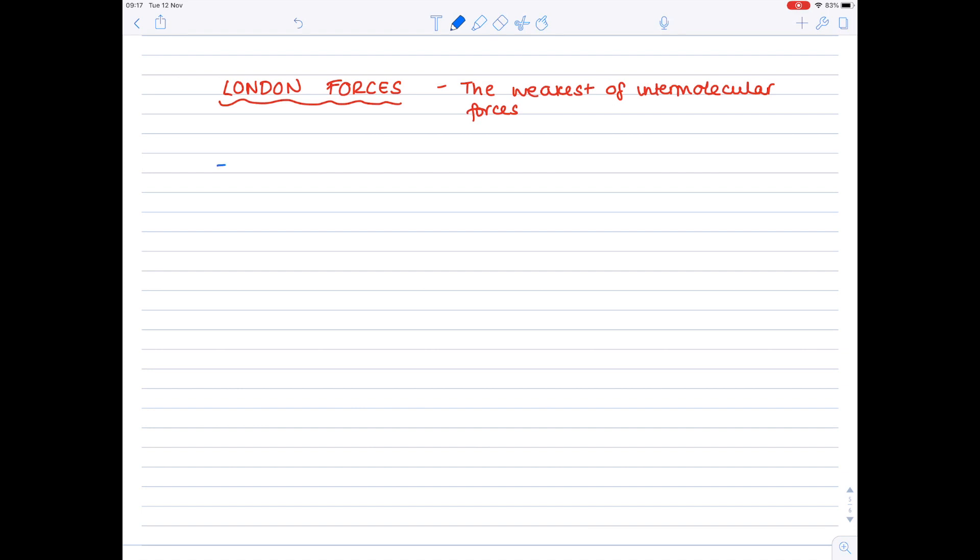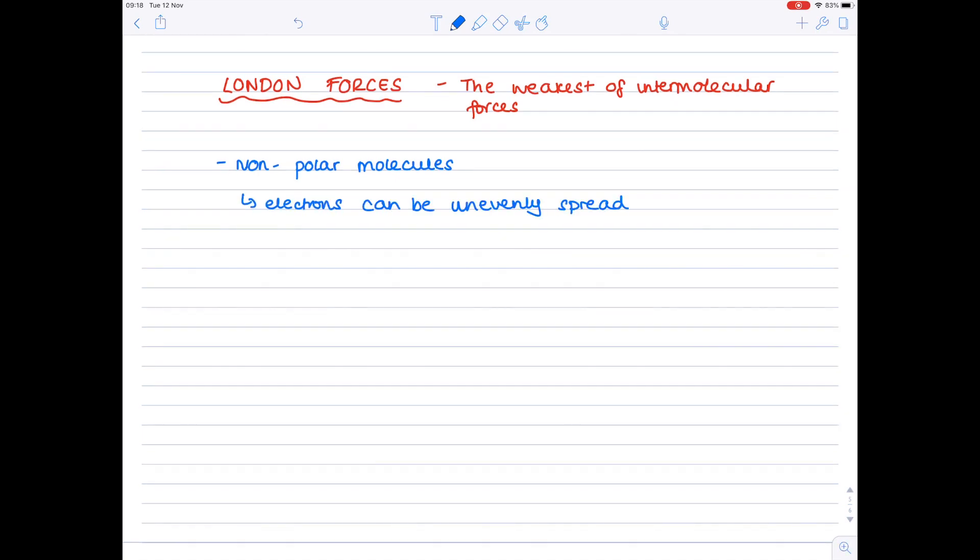London forces are found between non-polar molecules, and London forces are all due to the redistribution of electrons. So in non-polar molecules, electrons can be unevenly spread, and this produces temporary instantaneous dipoles. Temporary because they're not permanent, instantaneous because they occur extremely quickly.